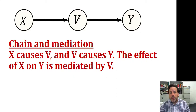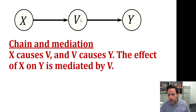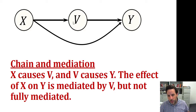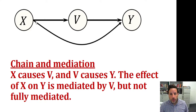That means the association between x and y is fully mediated by the causal relationship between v and y. In another case, only one aspect of the association between x and y is explained by the fact that x causes v and v causes y, but an aspect of the relationship between x and y is independent from that path. So although there is some mediation, there isn't full mediation.